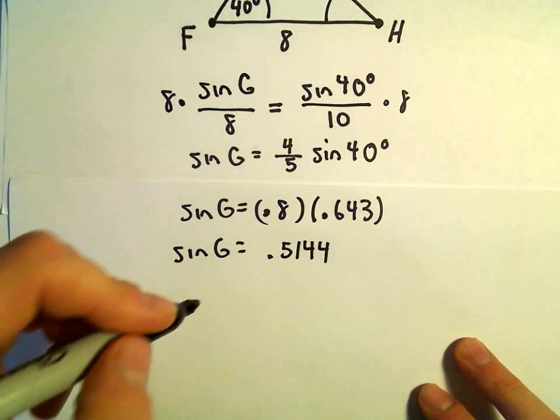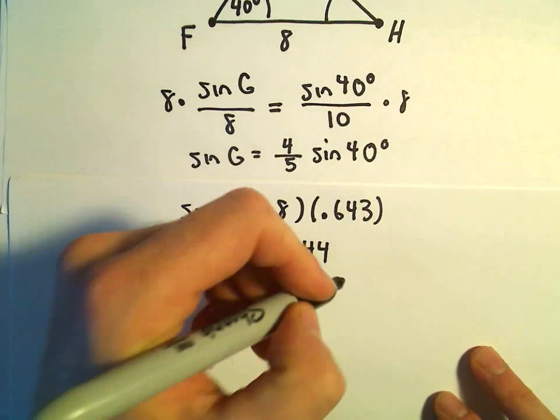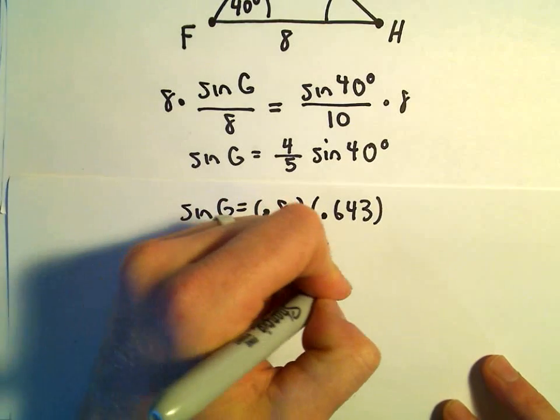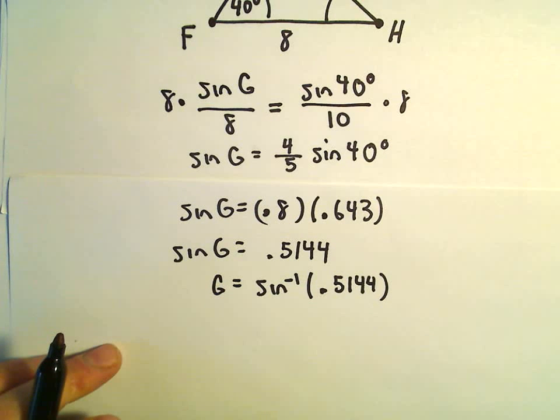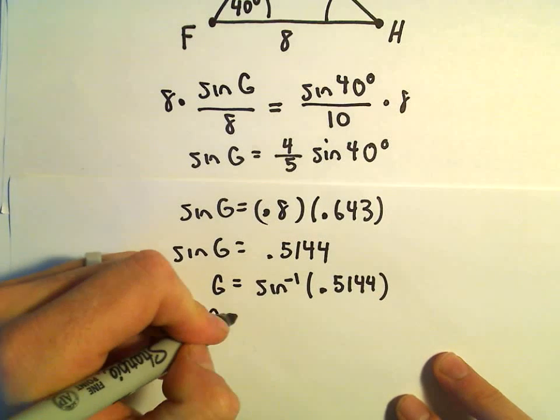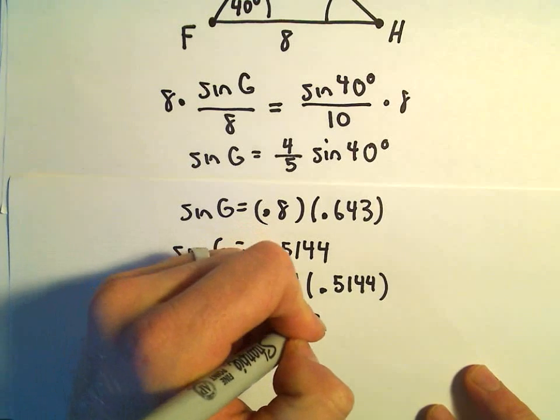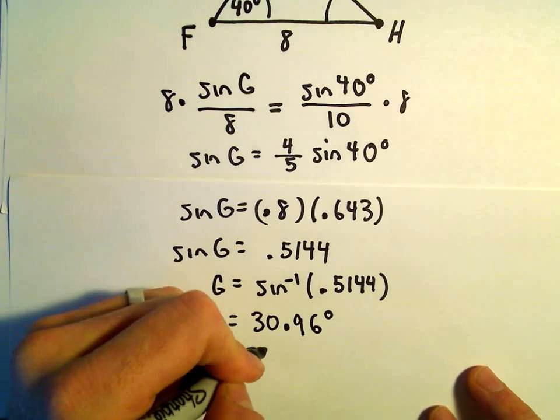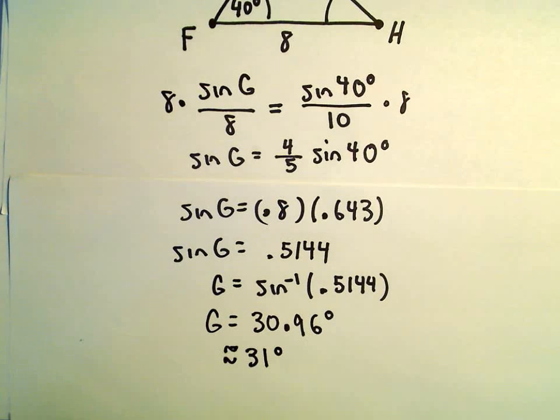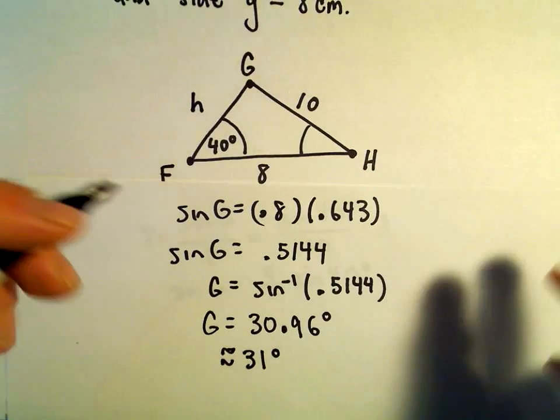So now I'm just going to take the inverse sine of both sides. So we'll get that angle G is the inverse sine, 0.5144. And I'm getting this to be roughly equal to 30.96 degrees. I think I'm just going to round that off. That's pretty close to 31 degrees. All right, so angle G now has a value of 31 degrees.